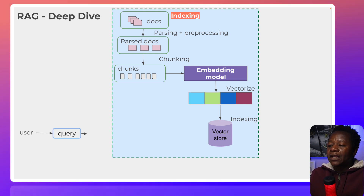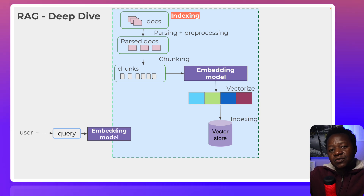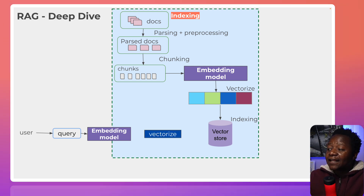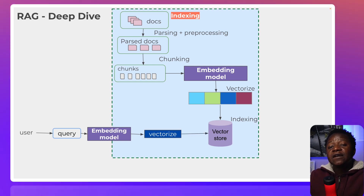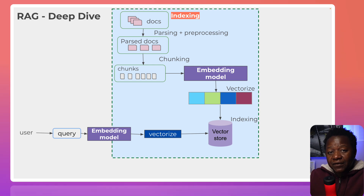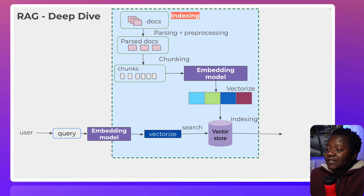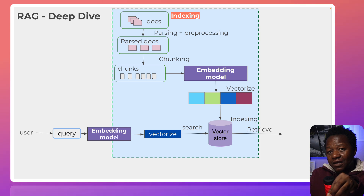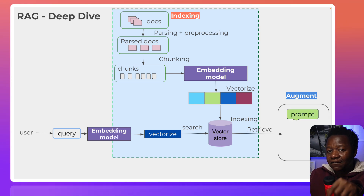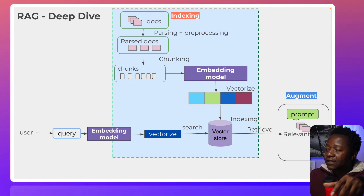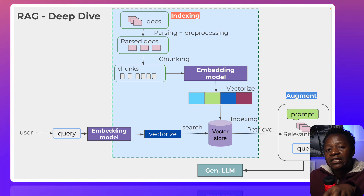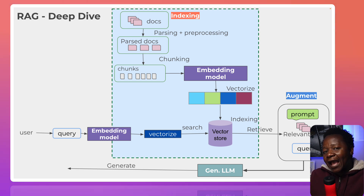The user comes in with a query, which goes through the process of embedding — we need to vectorize it as well. Once vectorized, it's passed through the vector database and we do a comparison — a similarity search — to find relevant documents. Those documents are retrieved — that's the 'retrieval' — and then passed along with the prompt as the 'augmentation.' All that information is passed into the large language model, so we get a more accurate response pertaining to our query.